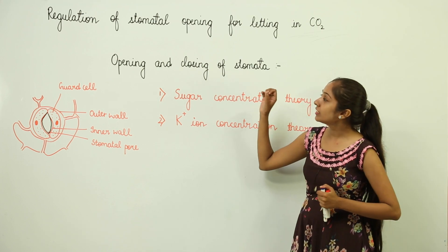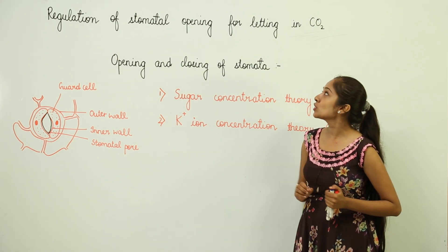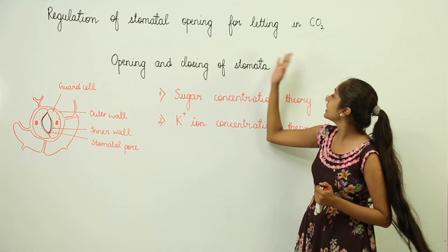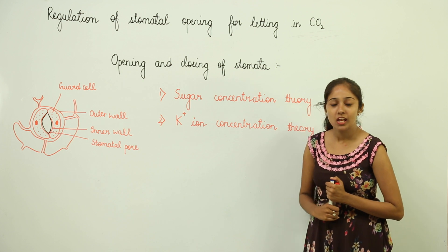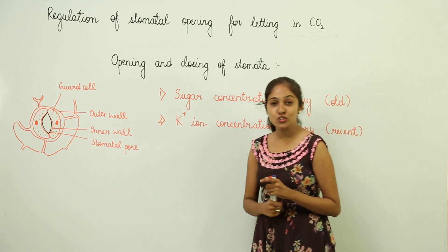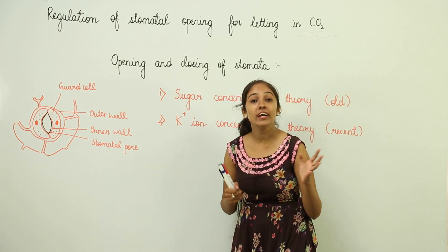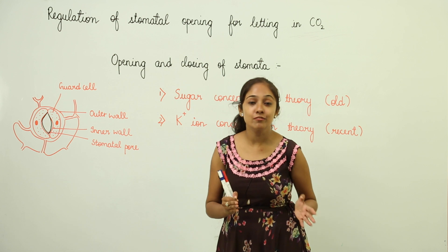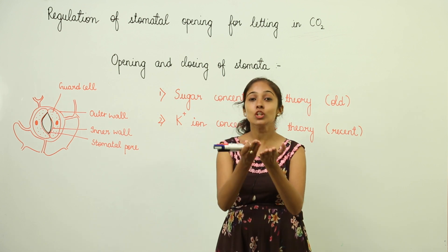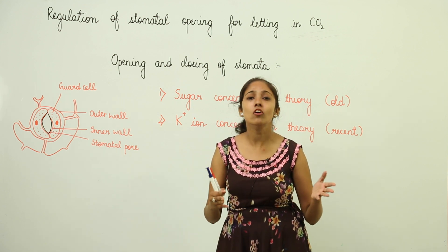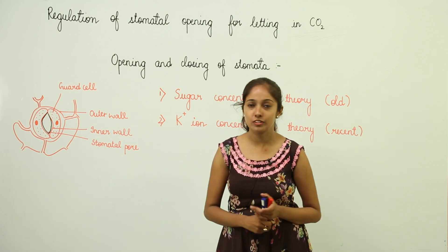Let us see how there is regulation of the stomatal opening for letting in CO2. When we talk about stomata, stomata are the tiny pores which are there on the lower surface of the leaf, mainly on the lower surface of the leaf.